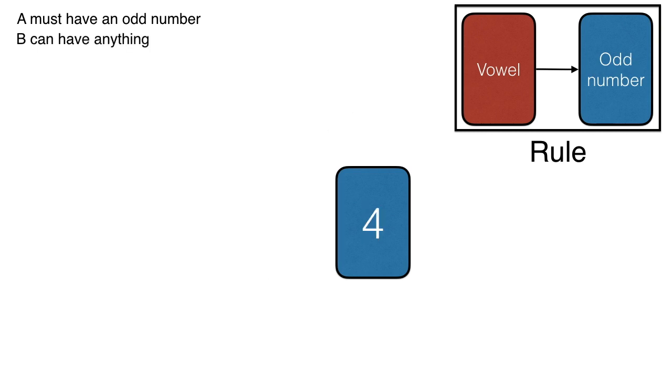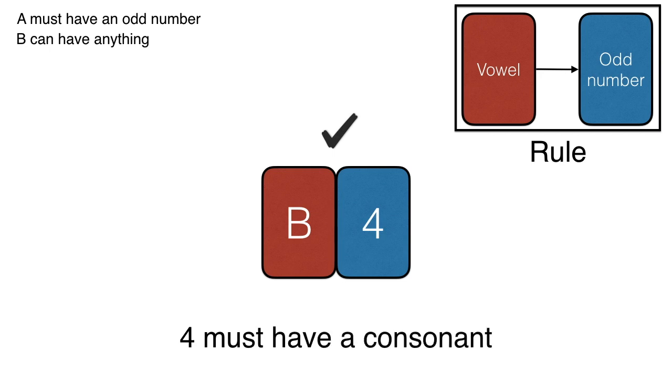The next card is a 4. This is the hardest one. What would happen if the 4 had a vowel on the other side? Say an A for example. Well, A is a vowel and vowel implies odd number so we are breaking the rule because the number is even. It's a 4. This is not good. However, if the 4 has a consonant on the other side then we are breaking no rule since consonants don't imply anything. Therefore, 4 must have a consonant in the other side. We'll remember this and move on.